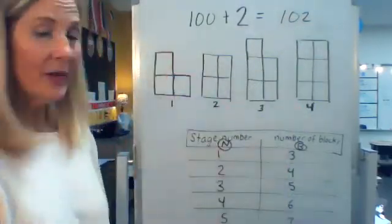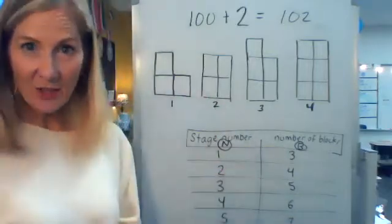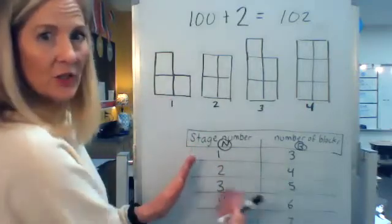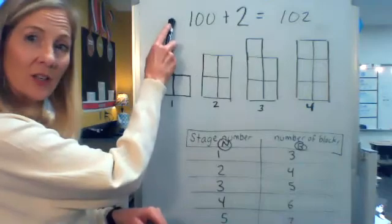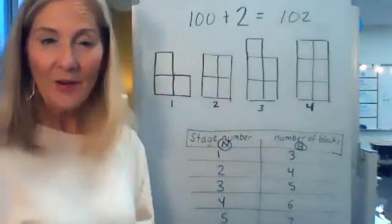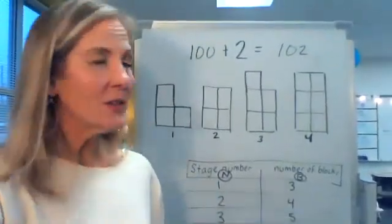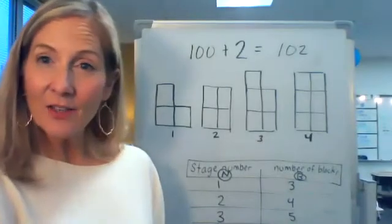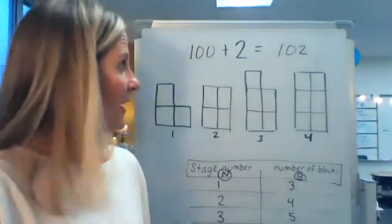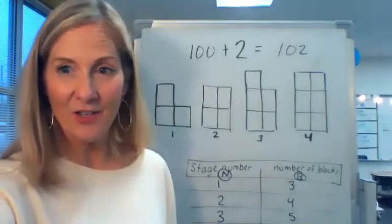So we could fill this out. We could do 1000. We could do stage number 38. We could do any stage number. Once we've analyzed the information, looked for relationships in the data, and created an equation that will work for every single situation. So when you're doing shape patterns, use some of your number pattern skills and your analyzing skills and your skill of putting data into a chart. And you will be able to find out an expression that will help you solve the block number for any stage. Have fun!